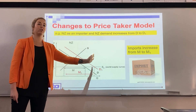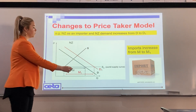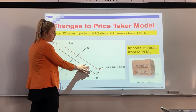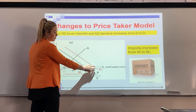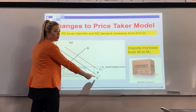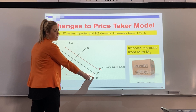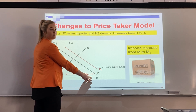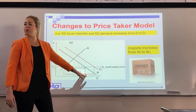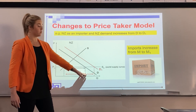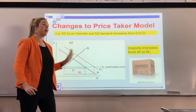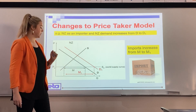When the demand curve has shifted, we need to find our new demand. The world price line continues on, and where it hits our new demand curve, this is our new quantity demanded. You would label this as Q, D1, NZ because it's now the next quantity demanded.